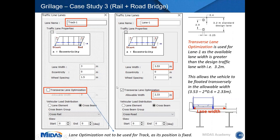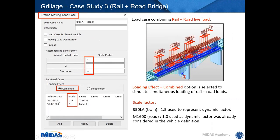To combine rail and road loads, select 'combine,' choose the rail load with its corresponding track, and the road load with its traffic lane. A scale factor of 1.5 is applied for rail to account for dynamic load allowance, while the scale factor is left as 1 for M1600 because Midas already accounts for the dynamic amplification factor within the M1600 definition.